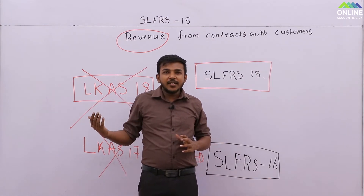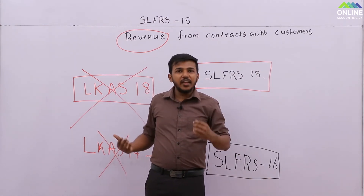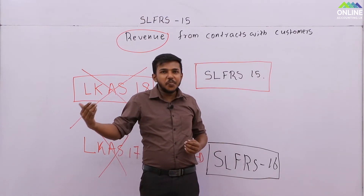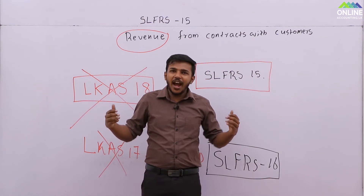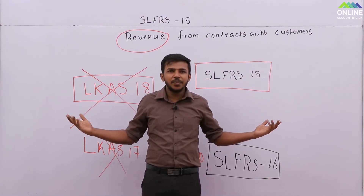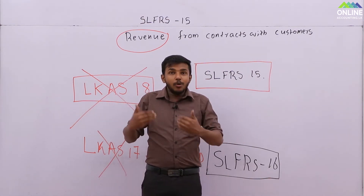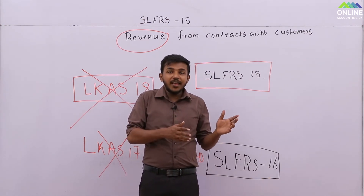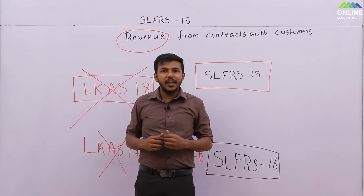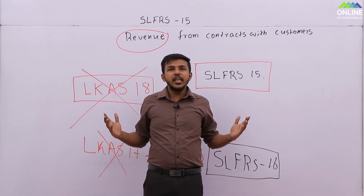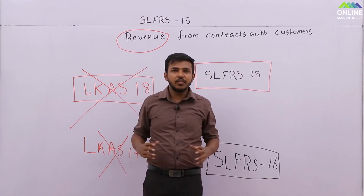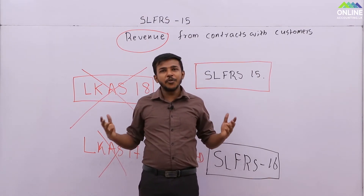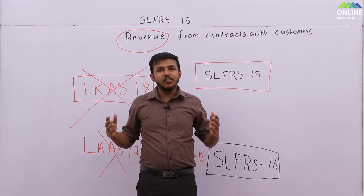Not only construction companies — if you consider a telecommunication industry, companies like Dialog, Mobitel, Etisalat, and Airtel have different ways to recognize revenue. Why? Because they give you different packages — a couple package, a postpaid package, or a D2D 250 package. So revenue recognition for telecom is somewhat different from hotel, grocery, and construction.